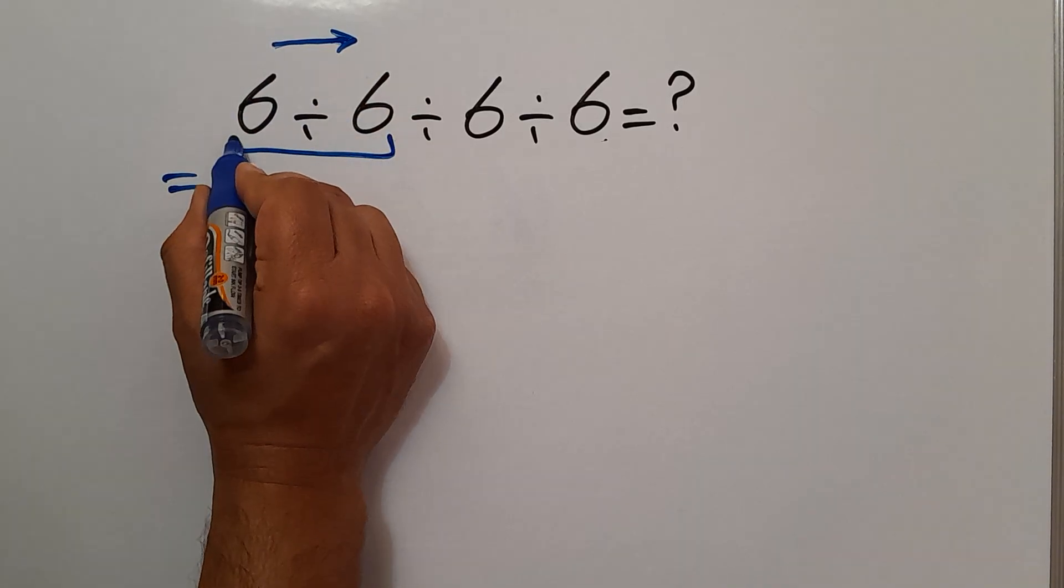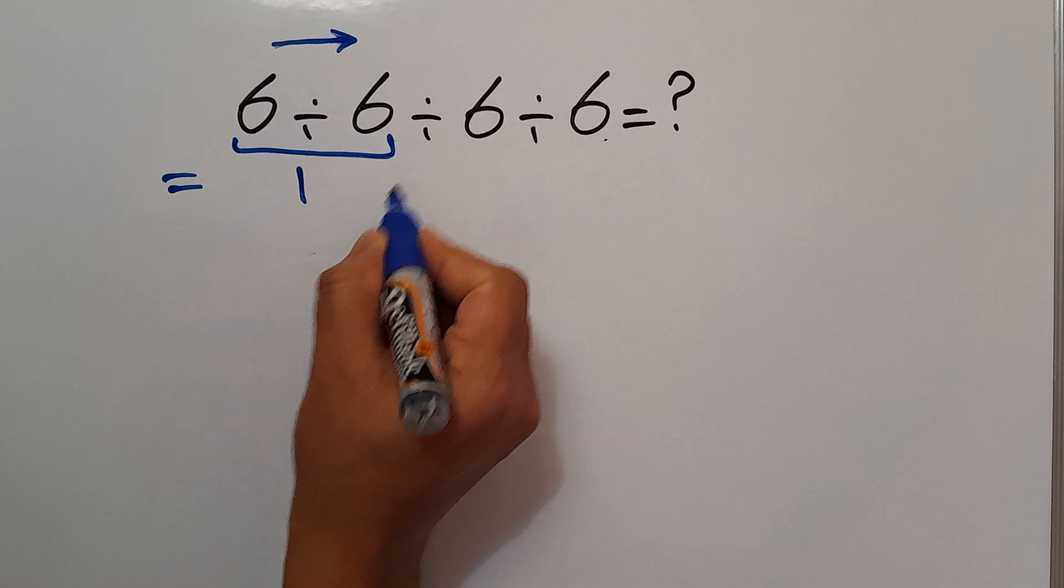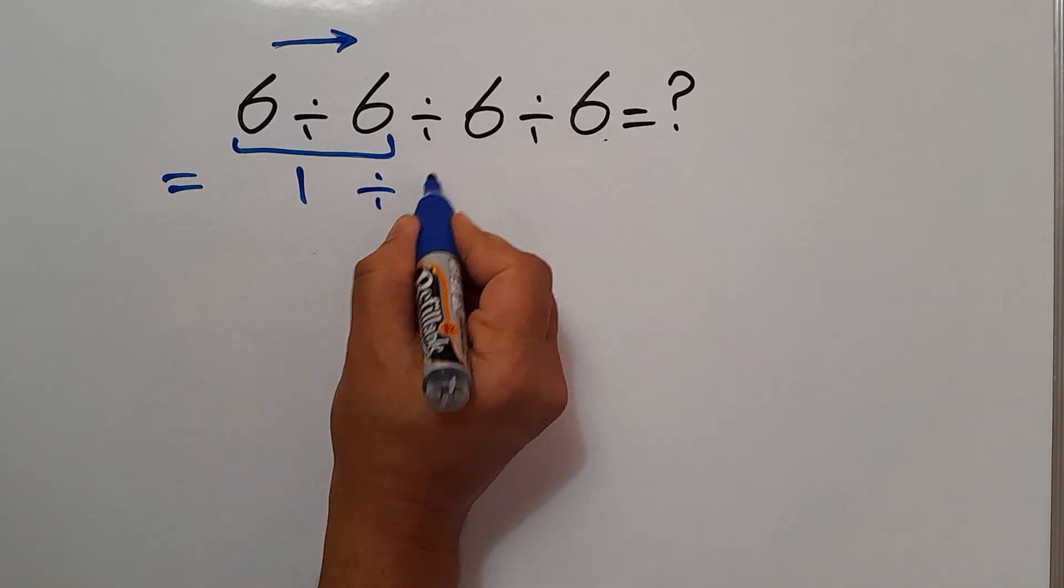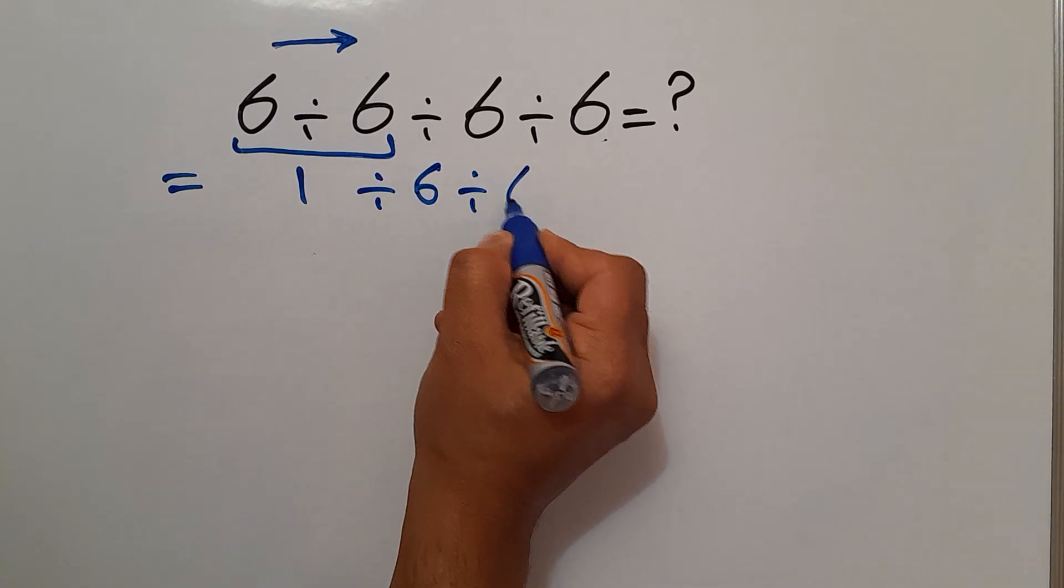6 divided by 6 equals 1. And let's recopy: divided by 6, divided by 6.